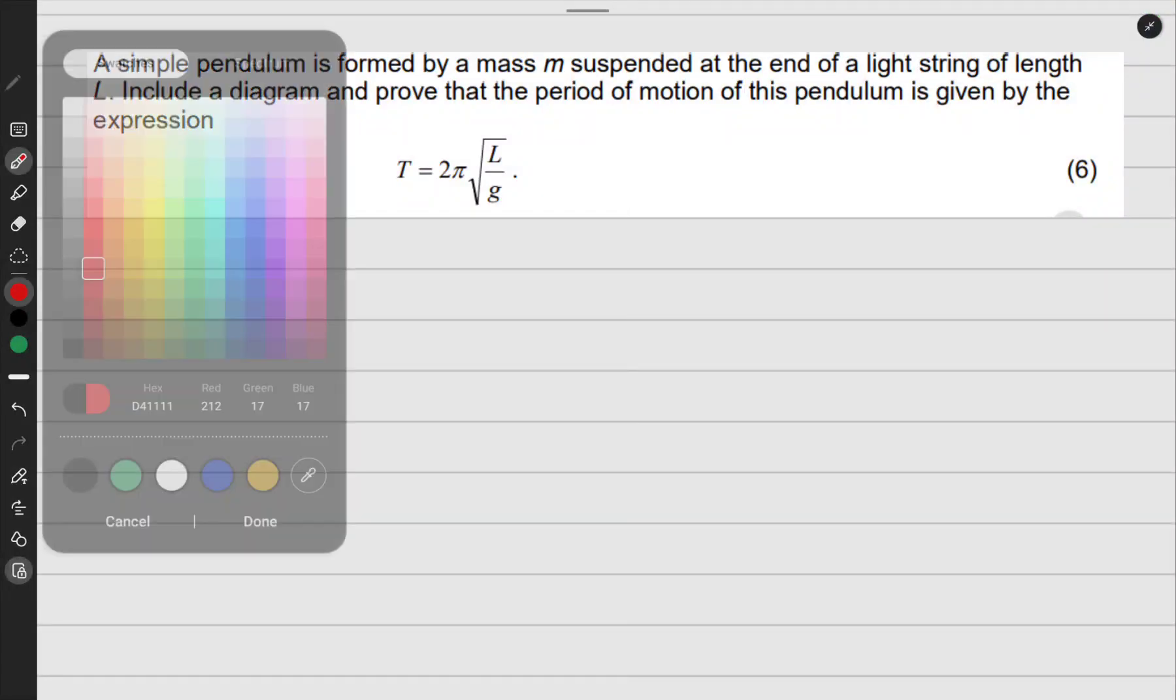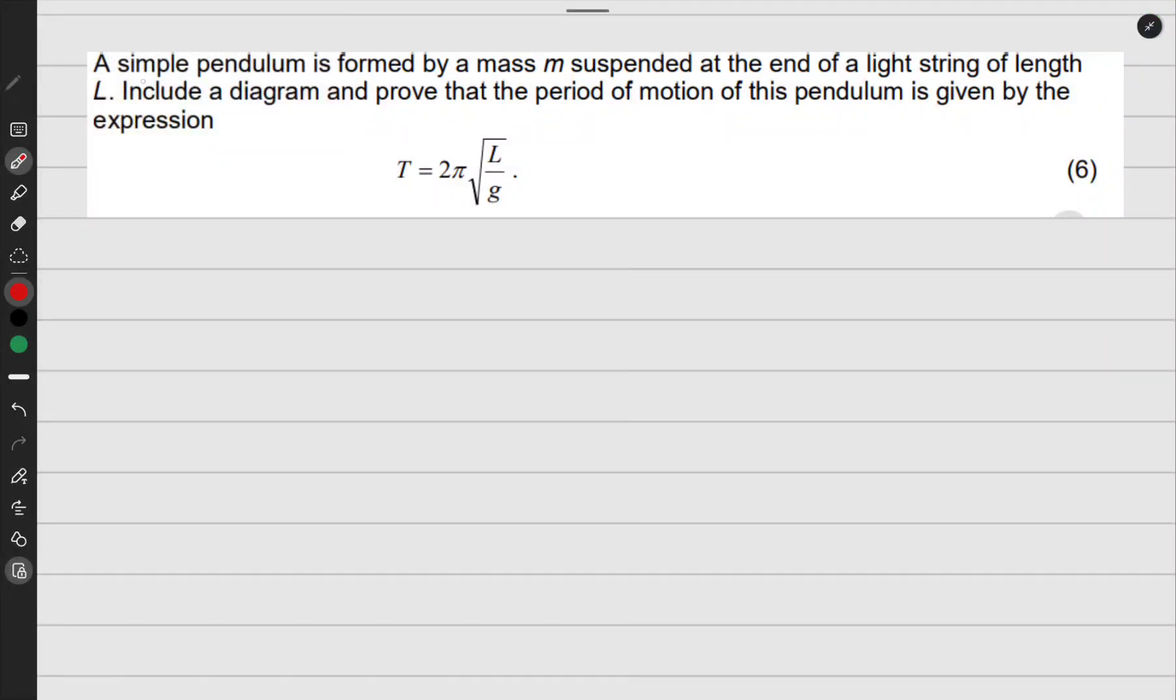Okay, we are going to do this derivation problem. A simple pendulum. We know that for a simple pendulum, the angle theta should be less than 15 degrees for the thing to be called a simple pendulum.